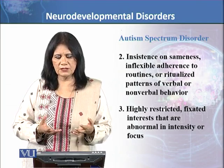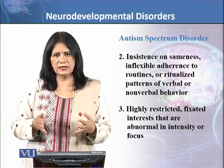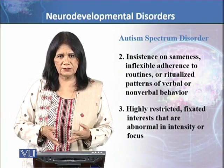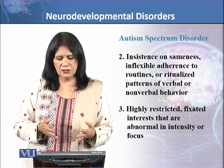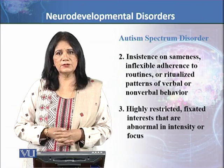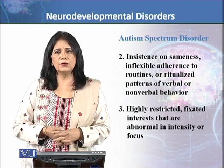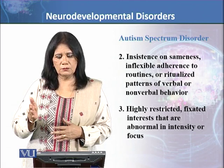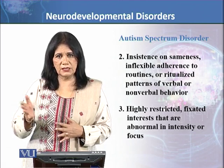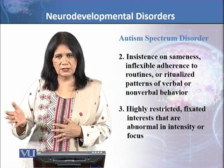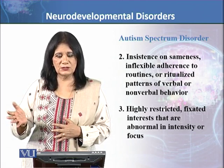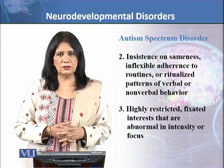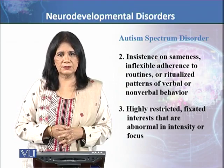In intellectual disability, intelligence level and intellectual functioning are the key feature, whereas in ASD they are not. However, comorbidity with mixed features is possible. When diagnosing, you need to look at the presenting needs — if intellectual disability is the primary issue, diagnose that; if it is Autism Spectrum Disorder, diagnose accordingly. Both can sometimes be diagnosed together.